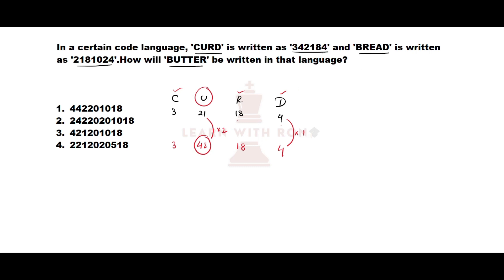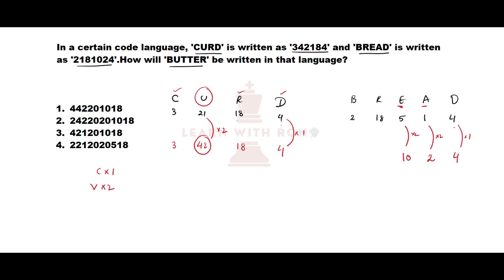Let's verify with 'bread': B=2, R=18, E=5, A=1, D=4. Applying the pattern — consonants ×1, vowels ×2: D×1=4, A×2=2, E×2=10, R×1=18, B×1=2. So the number cluster is 2, 18, 10, 2, 4, which matches the given coded format. Our pattern is confirmed: consonants multiplied by 1 and vowels multiplied by 2.